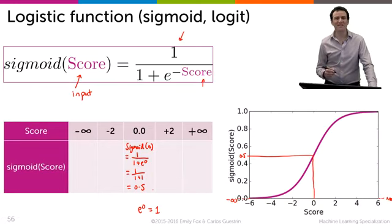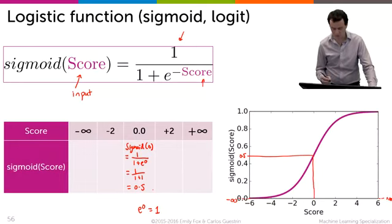So now we have that if the score of zero is input, you get the output of 0.5. That's super exciting.